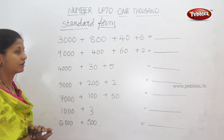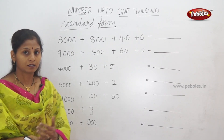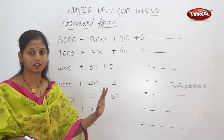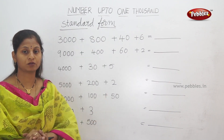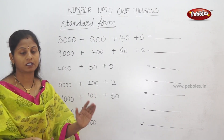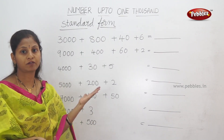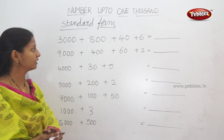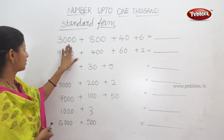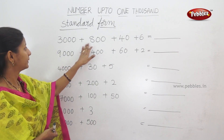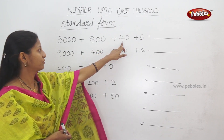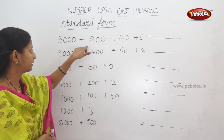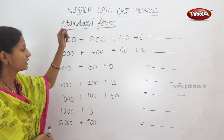Standard form. So, reverse. Expanded form. First one: 3000 plus 800 plus 40 plus 6. Expanded form. This is standard form.